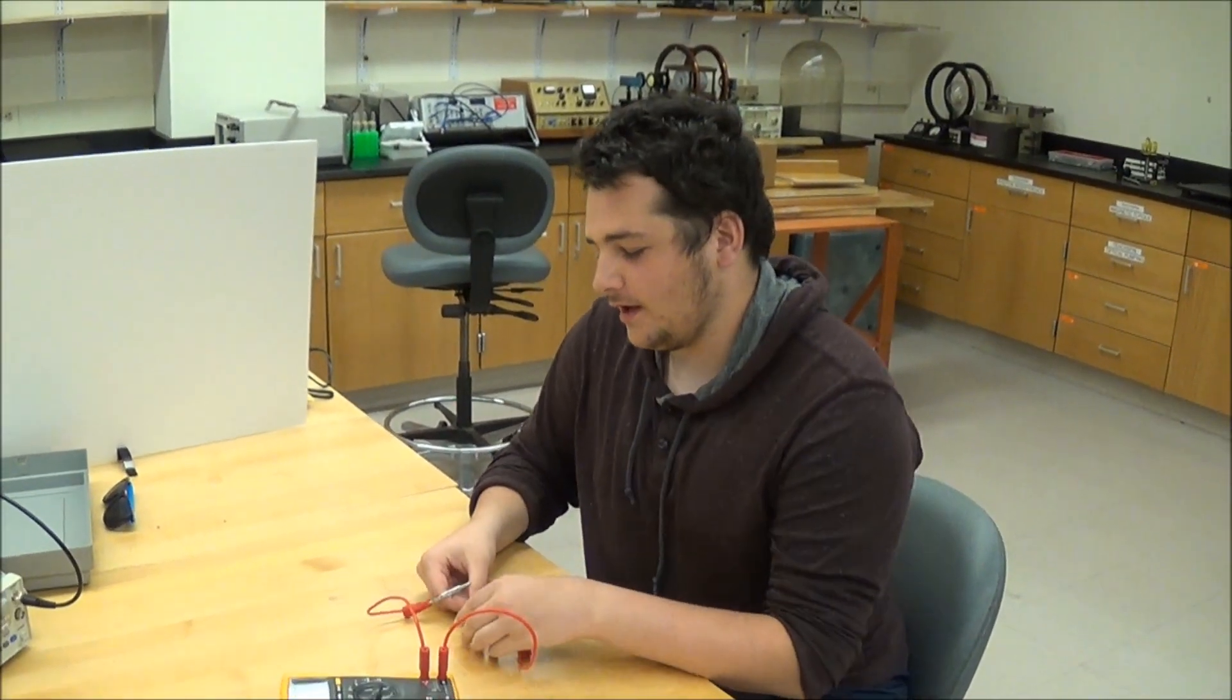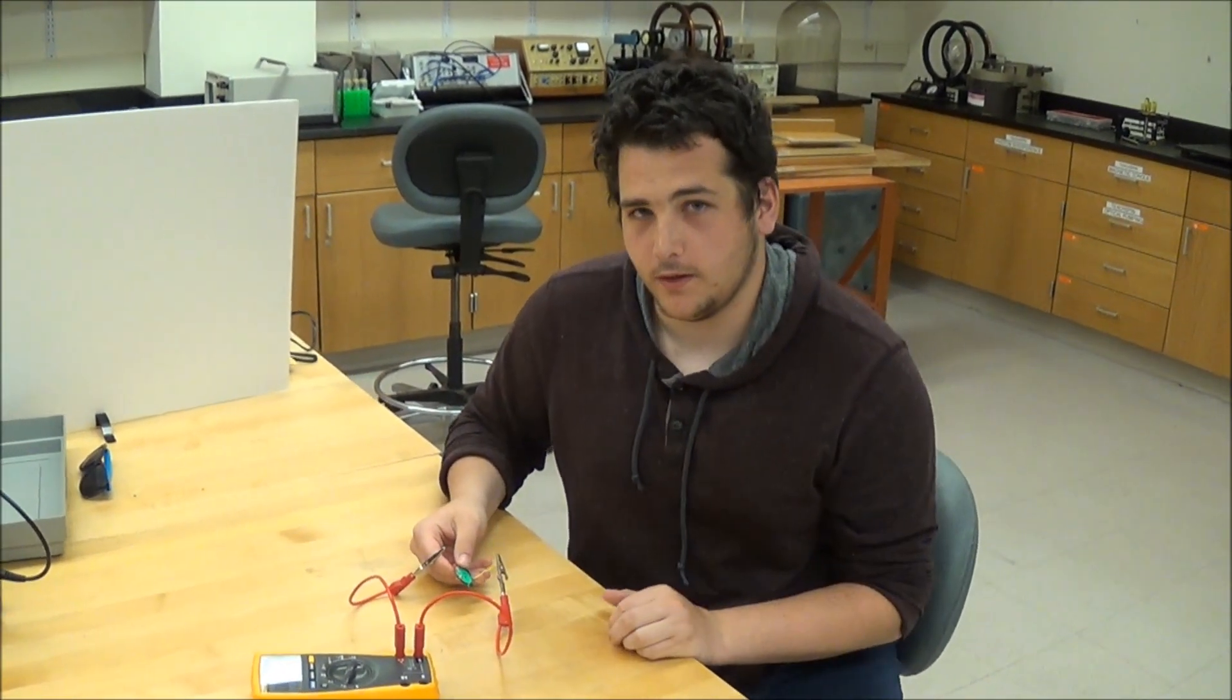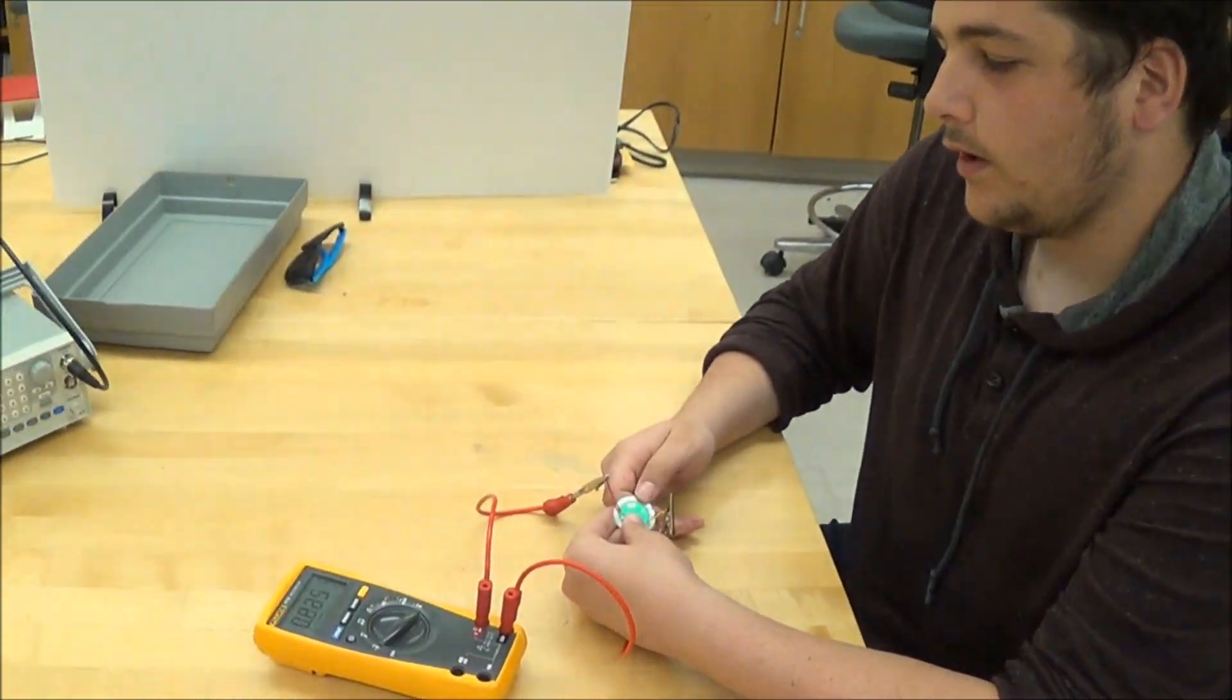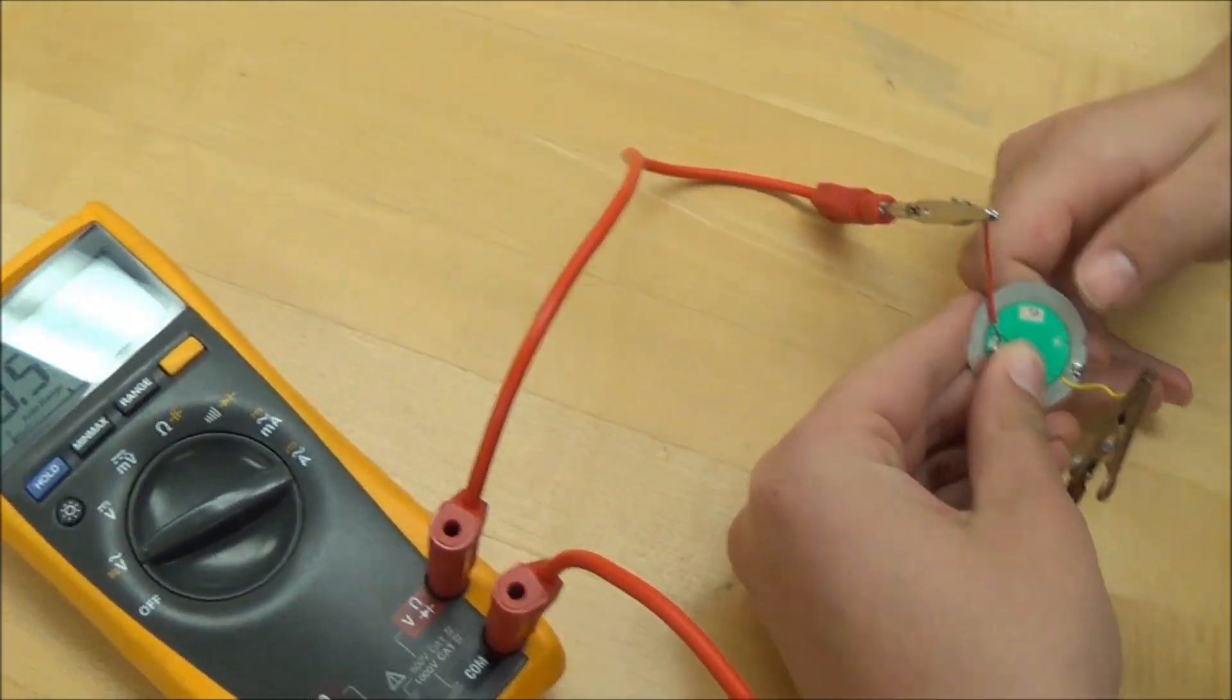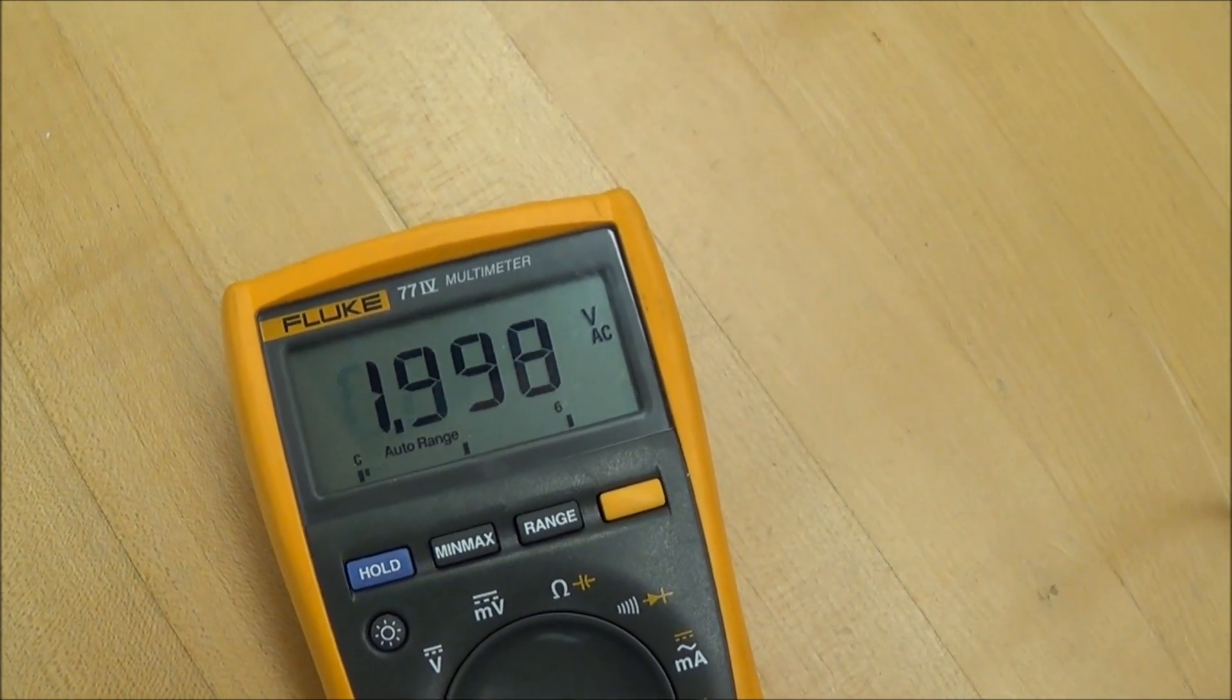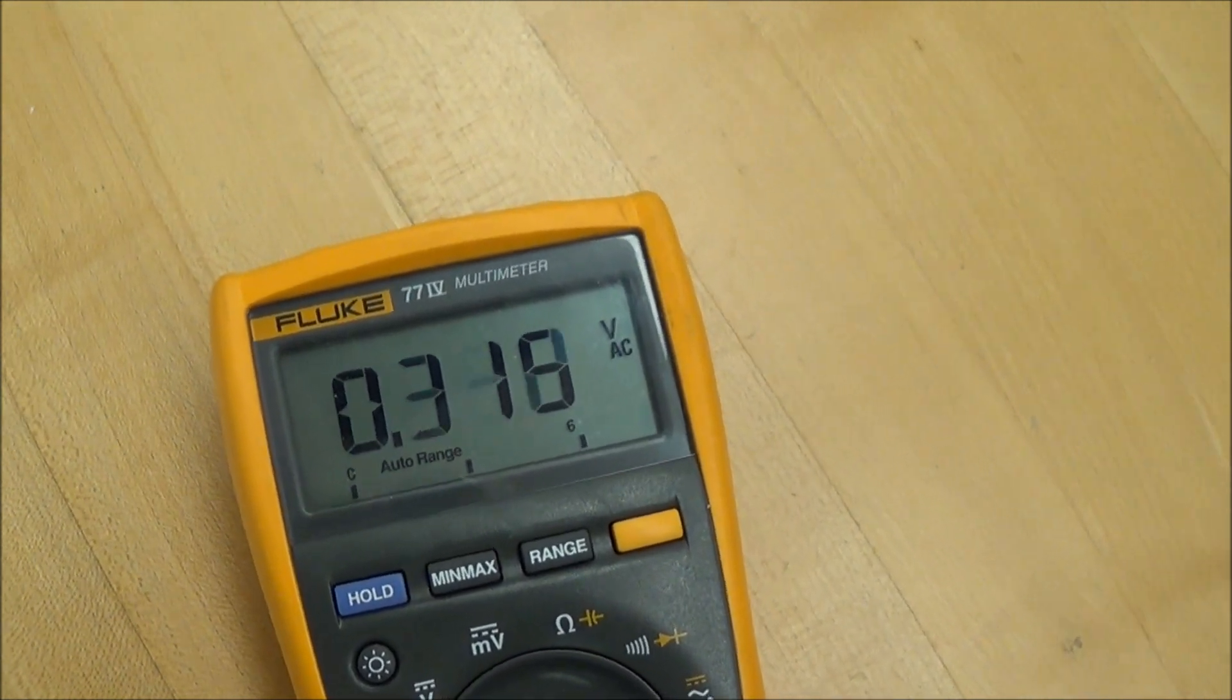So, right now, we have our piezo material hooked up to a multimeter reading voltage, and what we can demonstrate now is that by applying a pressure, flicking this material, we can generate a voltage picked up by our multimeter. So, so long as I keep flicking, a voltage will keep being produced.